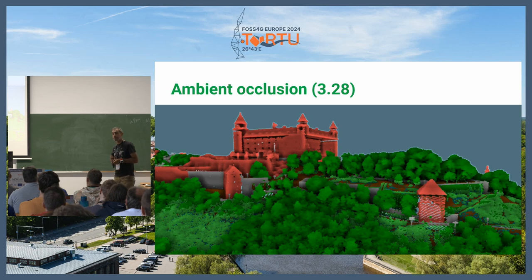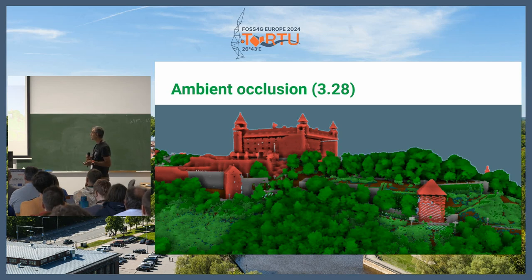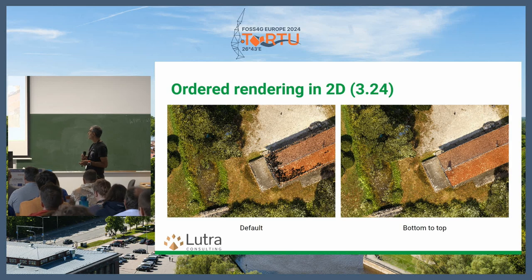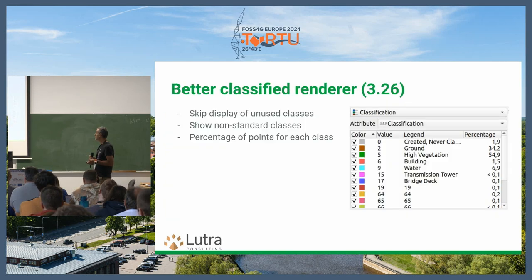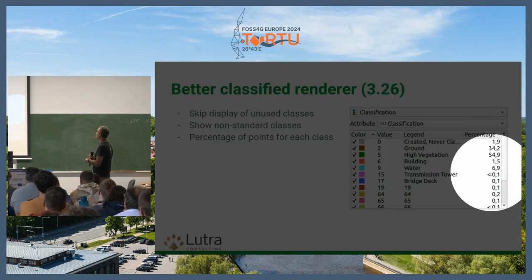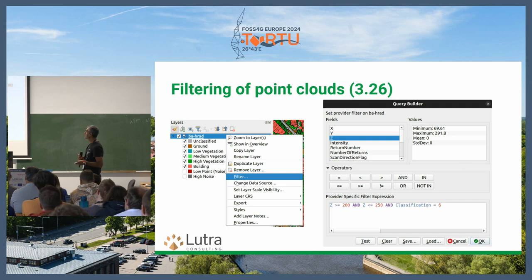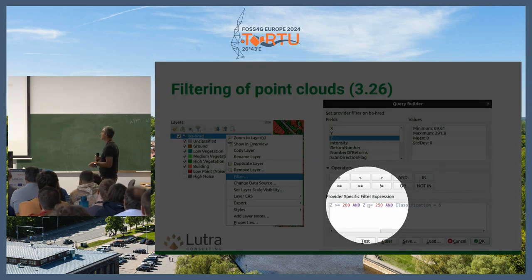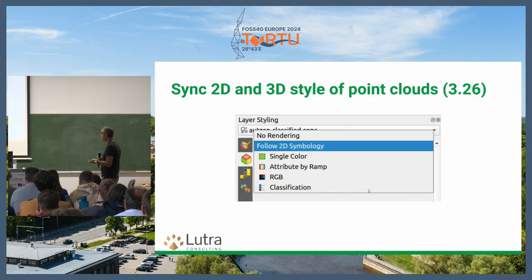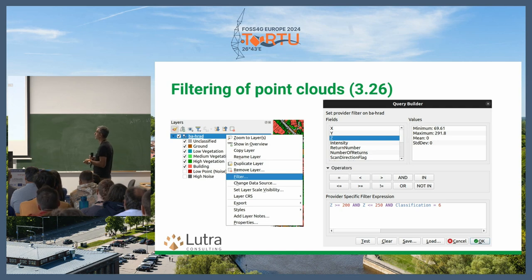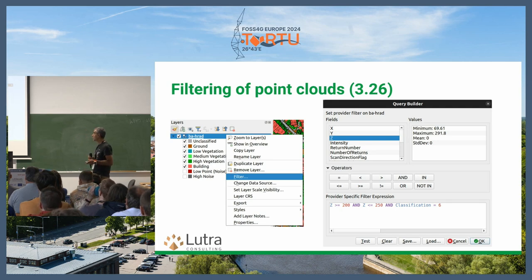I'll go quickly through these features — you should see all of them either in QGIS release notes or on our blog posts. We added rendering order of points and more information about classification statistics per class. Also filtering, so you can easily filter your data if you want to see, say, elevation between a range and a specific classification like ground. You can do filtering similar to what you do with vectors in QGIS — open the layer properties, use a query builder, and filter your data.